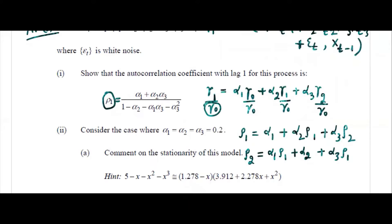We will try to solve — it will be exactly like solving simultaneous equations. If you solve these two equations, you can eliminate one variable; we'll try to eliminate rho 2, because rho 1 needs to be expressed in terms of alpha 1, alpha 2, alpha 3 — that is what you need to do.